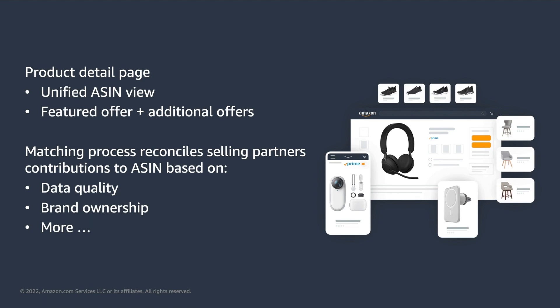When it comes to the buyer experience, both ASIN and SKU play a role. The product detail page shows a unified ASIN view with the product facts, like brand, description, and images. All buyers will see the same information. Additionally, Amazon will select for each buyer a featured offer. This offer is the one Amazon considers to be the best for that specific customer, based on different factors like shipping cost. Additional offers from other selling partners will also be displayed in case the buyer prefers an alternative.